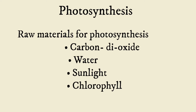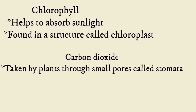Photosynthesis: the raw materials of photosynthesis are carbon dioxide, water, sunlight, and chlorophyll. Chlorophyll helps to absorb sunlight and is found in a structure called the chloroplast. Carbon dioxide is taken in by plants through small pores called stomata.